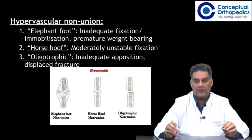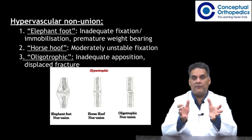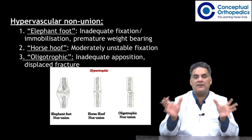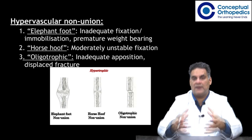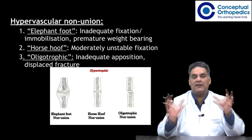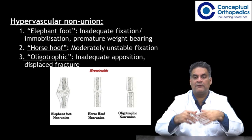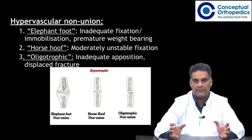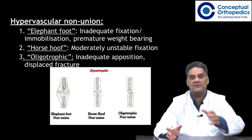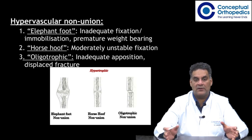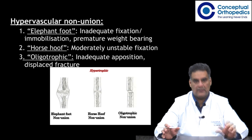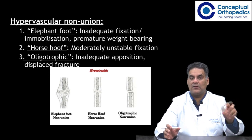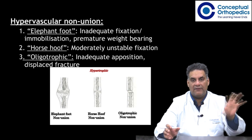When you have hypervascular nonunion it can be an elephant foot — there is inadequate fixation so the bony ends keep rubbing together and form a copious amount of cartilaginous callus which will not bridge and will not unite. They have enough cartilage-like callus but lack stability to bridge, so the callus stage never changes into the consolidation stage of bone union. This is elephant foot — inadequate fixation or immobilization due to premature weight bearing.